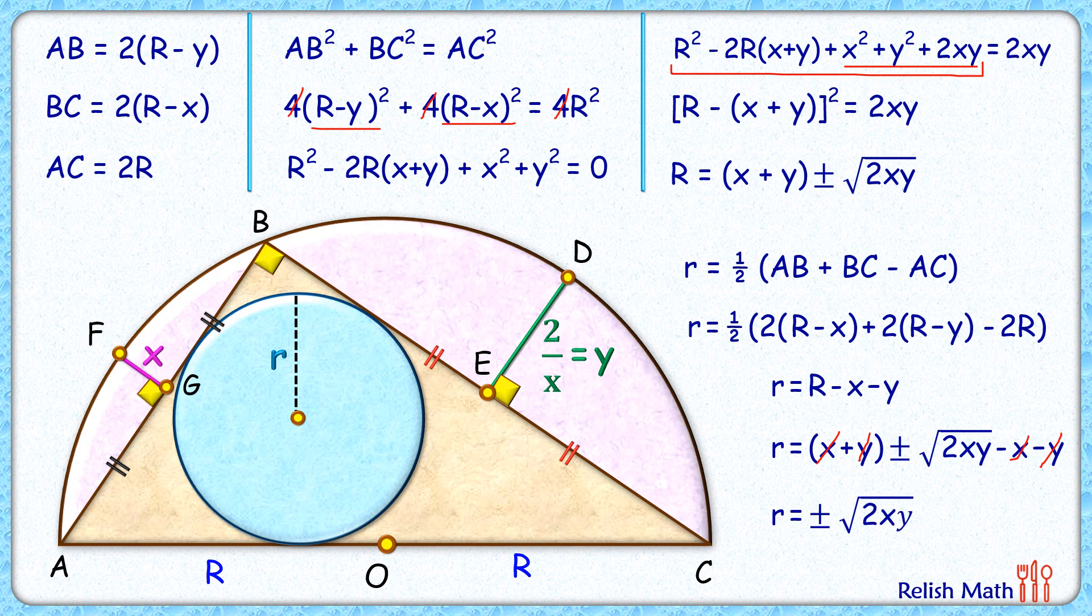But small r the inradius cannot be negative, so avoiding this negative sign here, we will get r as √(2xy). And y this we have derived earlier right, y is nothing but 2/x.